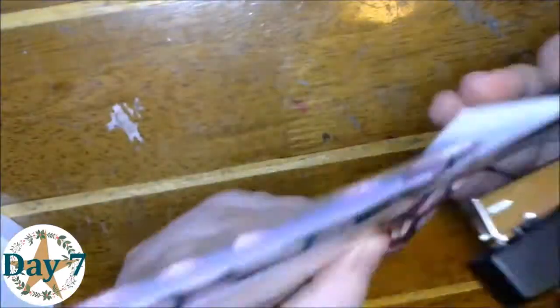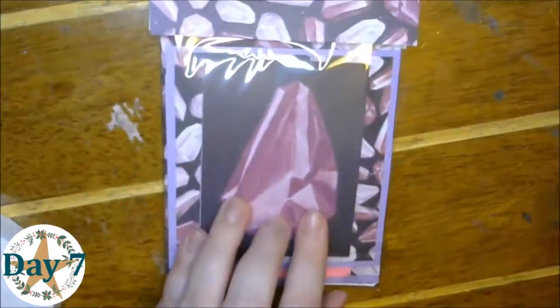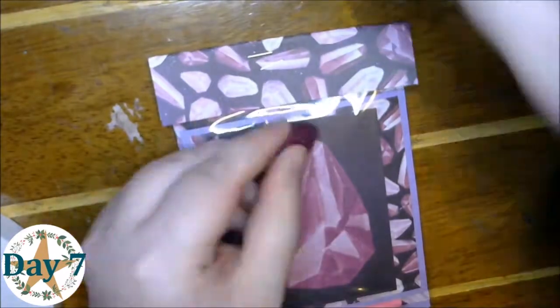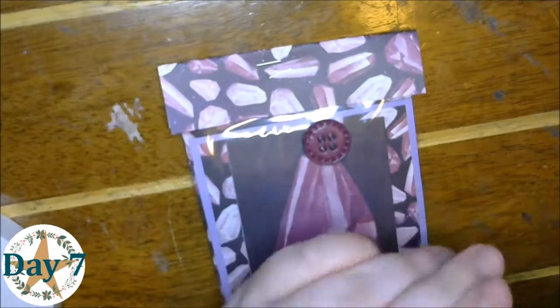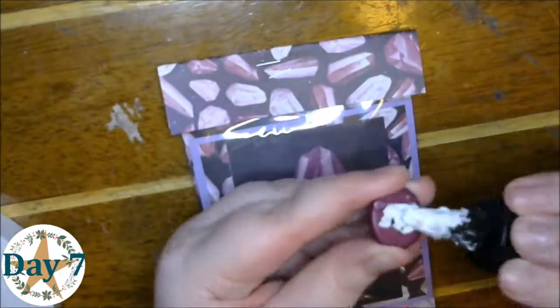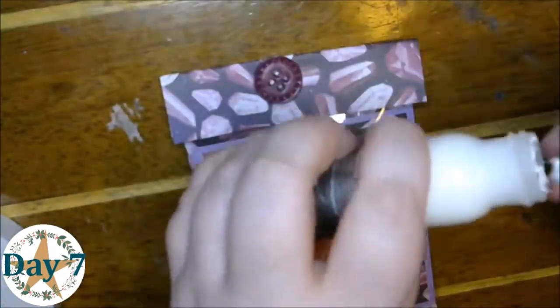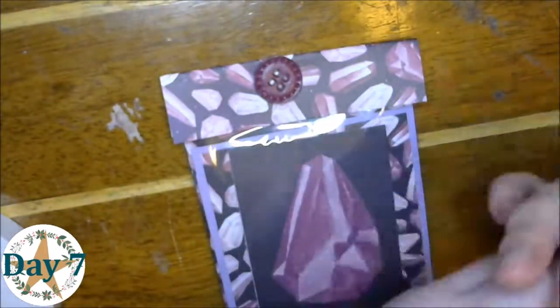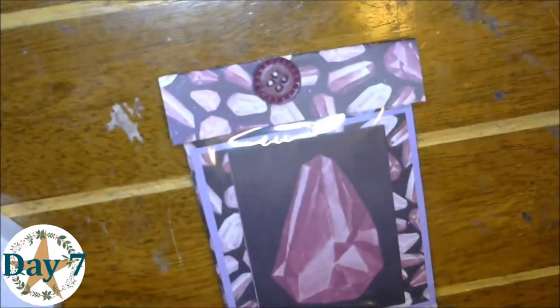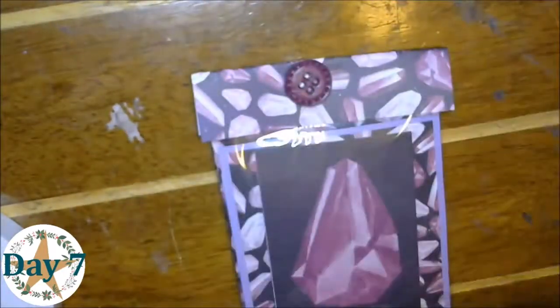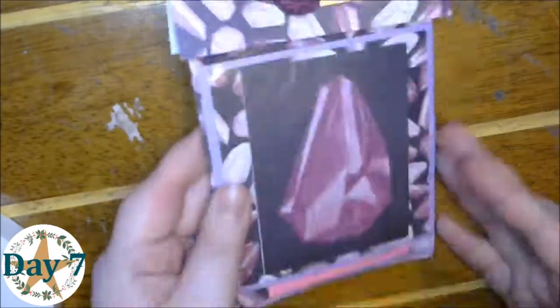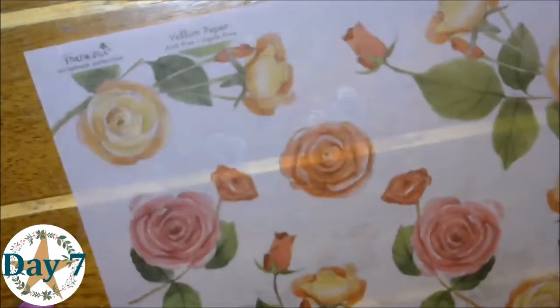And then the little notebook you can do any size you want. I just cut the eight and a half by eleven in half and then folded it, and then put some white paper that I cut and folded, and then just stapled it. Very simple. I think we've made notebooks in the past here, so they're very easy to figure out, not very hard at all.